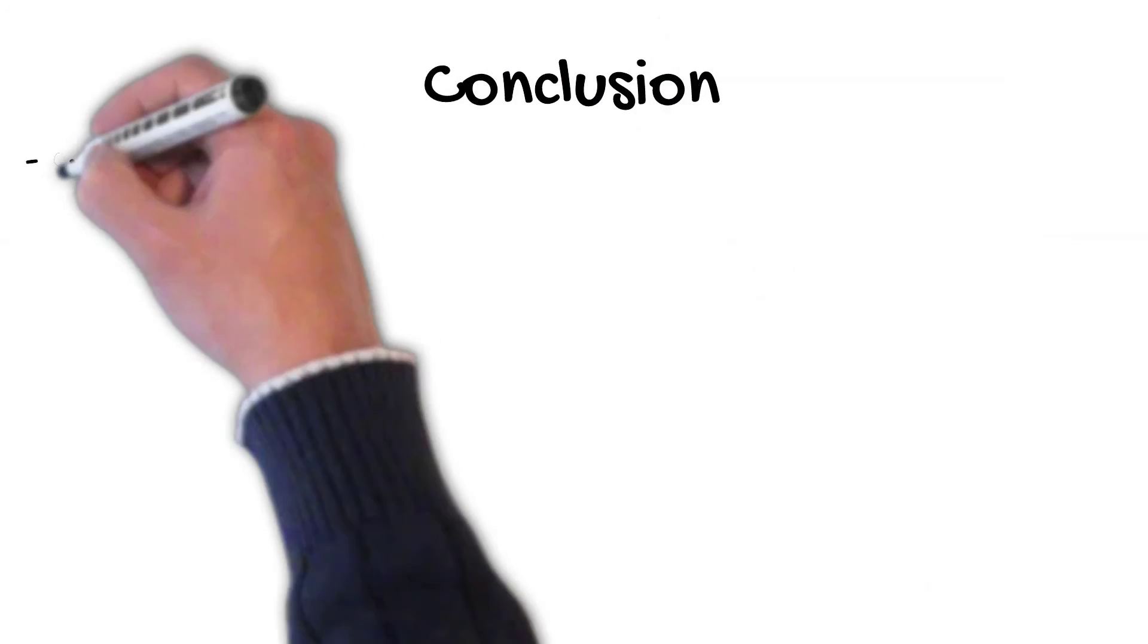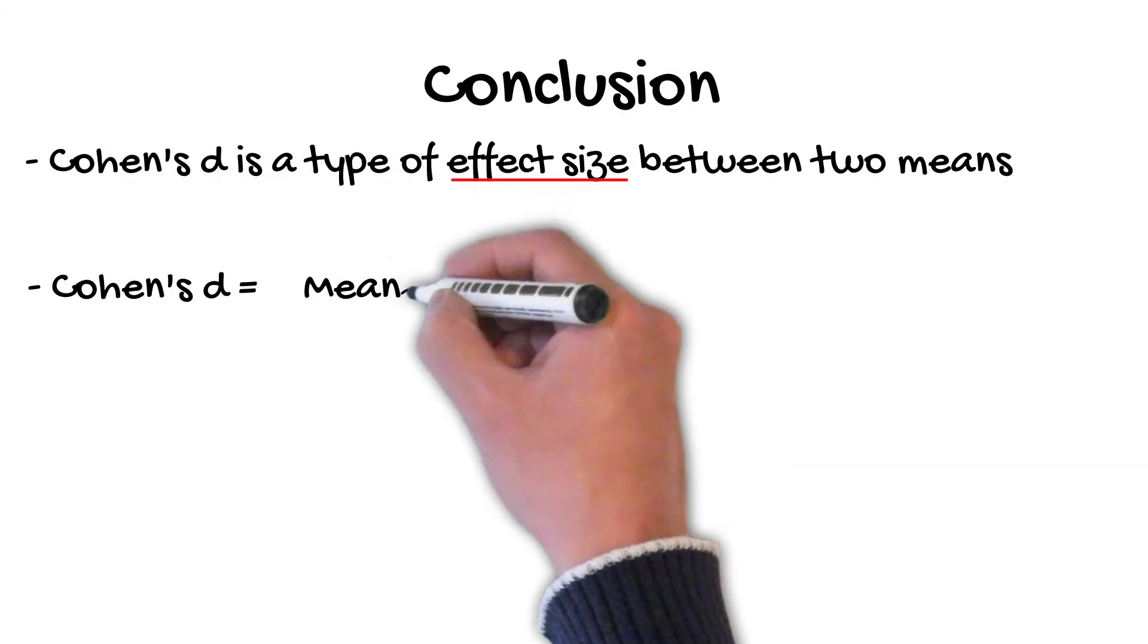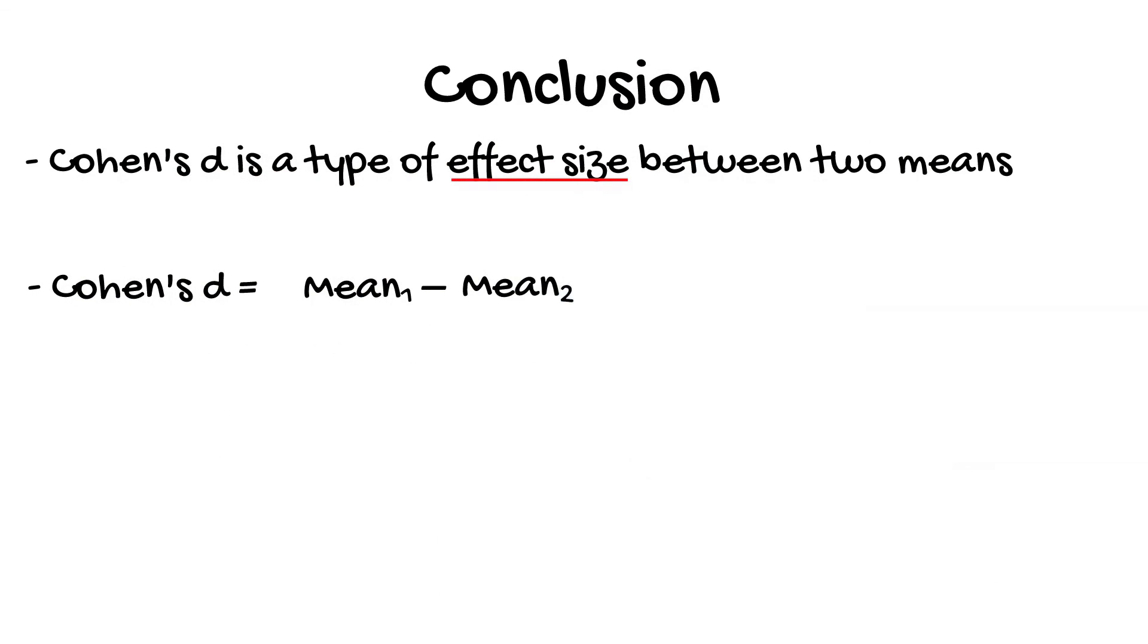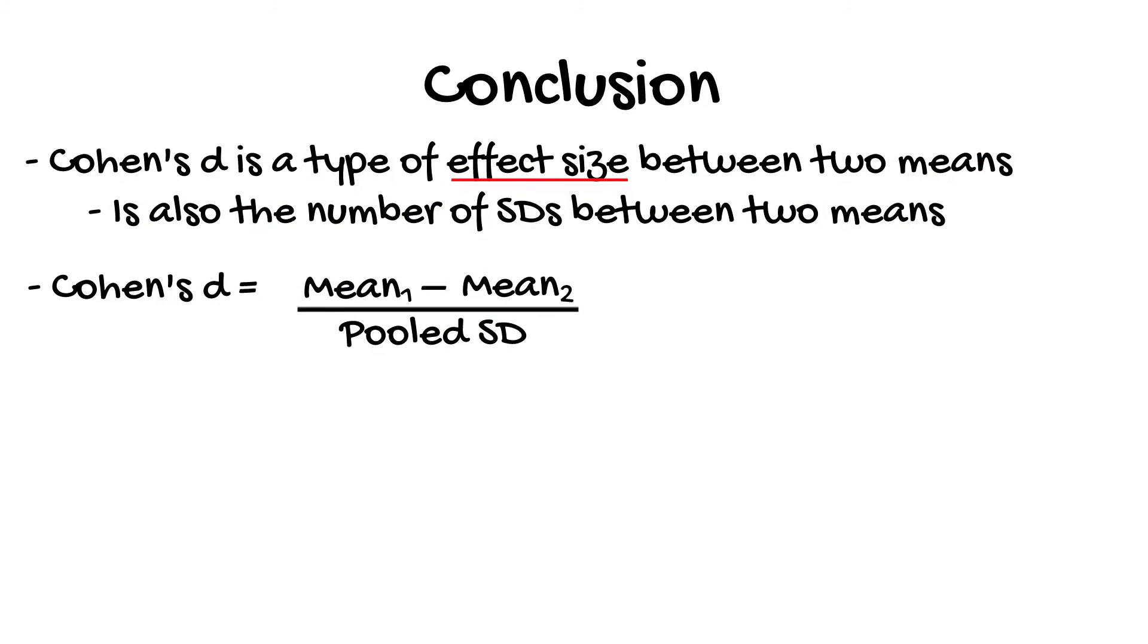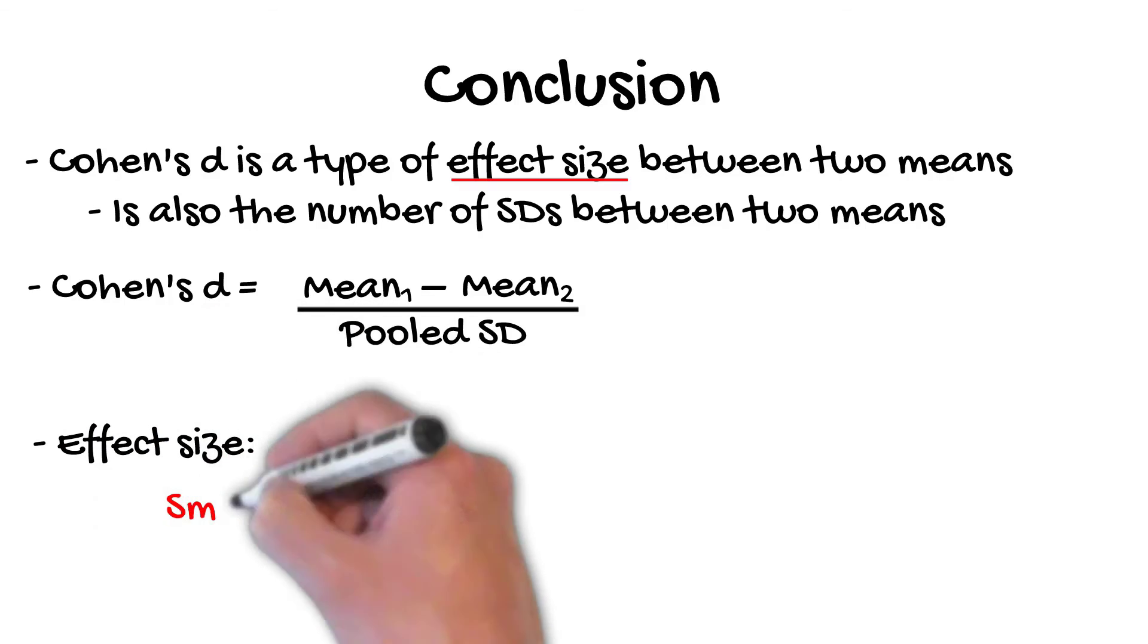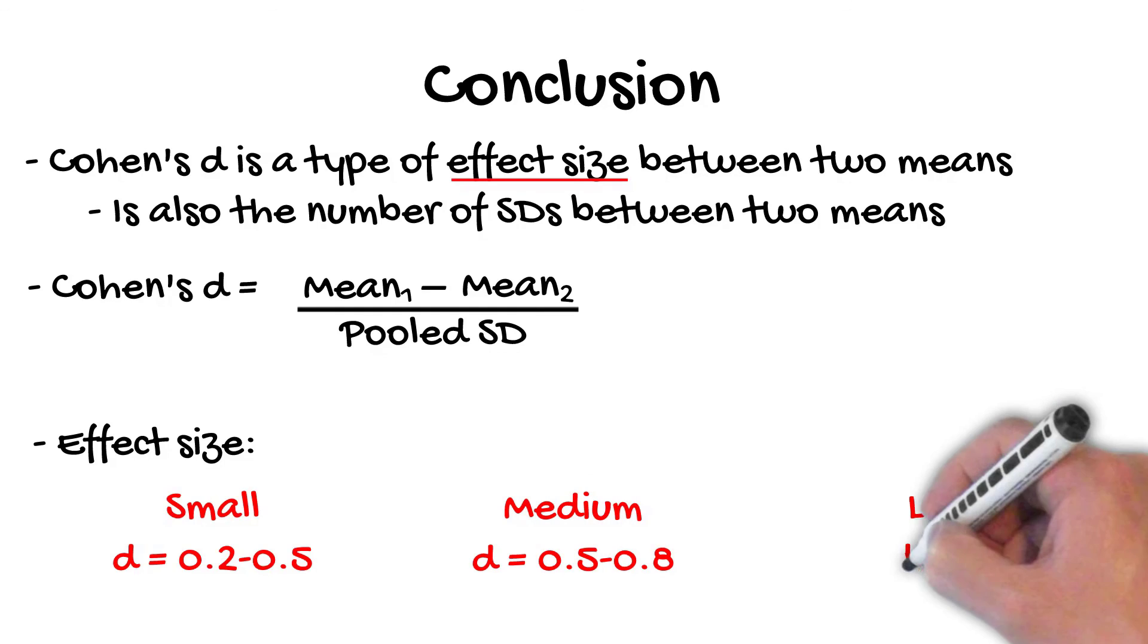So now you know that Cohen's D is a type of an effect size between two means. And there are many variants of the Cohen's D formula. Mainly, they differ in how the pooled standard deviation is calculated. And simply, Cohen's D values are the number of standard deviations between the two groups. And finally, Cohen's D values can be generally split into three groups: small effect sizes where D equals 0.2 to 0.5, medium effect sizes where D equals 0.5 to 0.8, and large effect sizes where D is greater than 0.8.